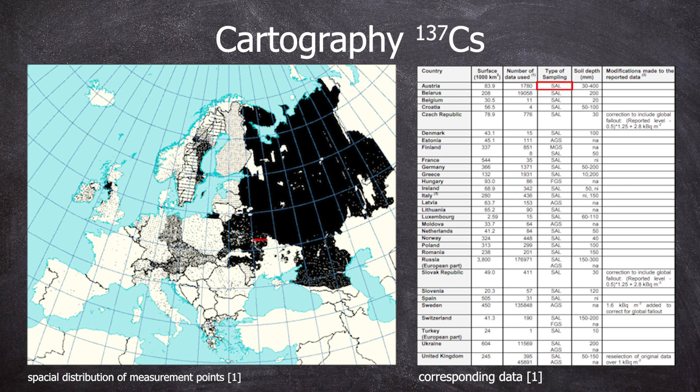The specific method abbreviations used are: SAL — soil sample analyzed by gamma spectrometry in a lab; AGS — airborne gamma spectrometry; FGS — field gamma spectrometry; and MGS — mobile gamma spectrometry.